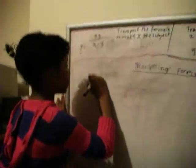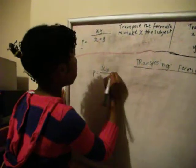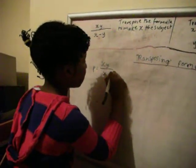The first thing we're going to look at is p equals xy over x minus y.